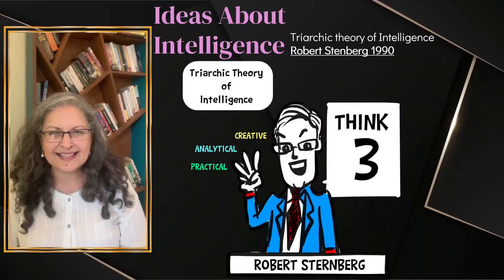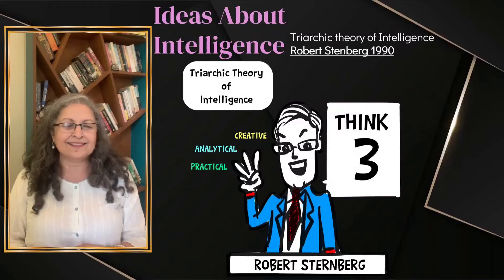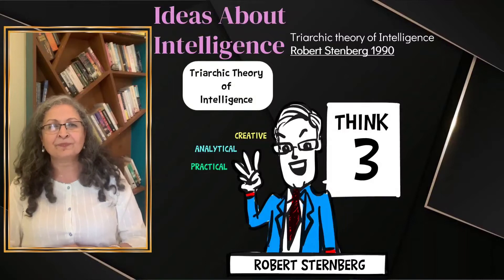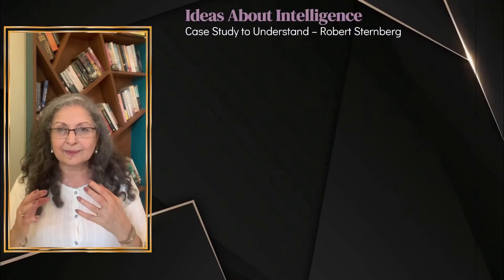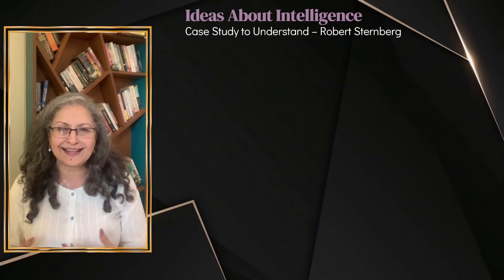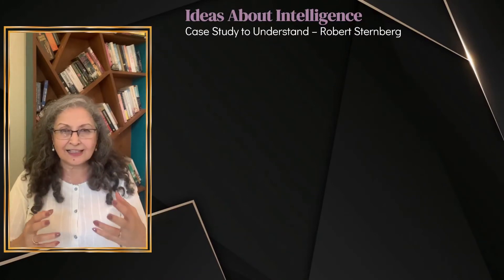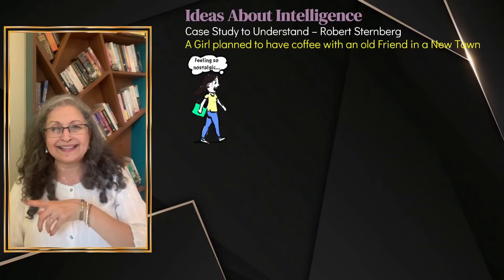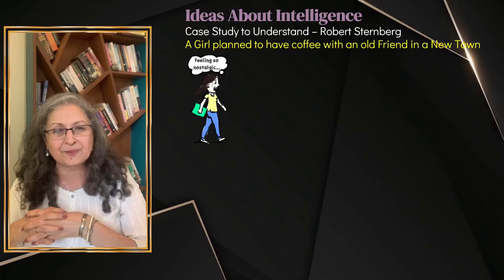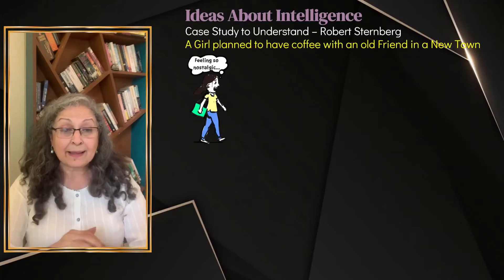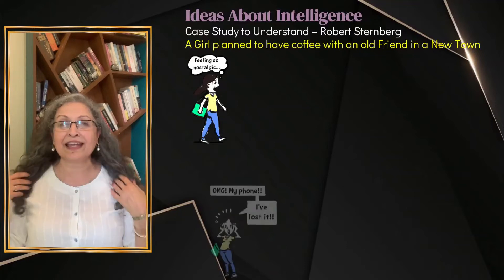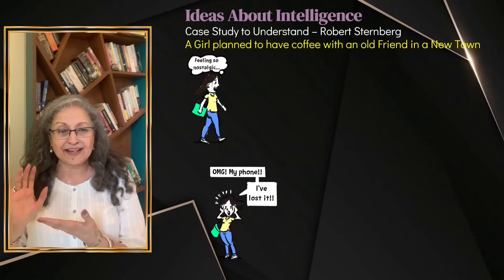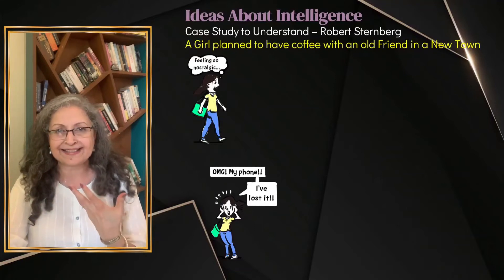Here is a tale that can illustrate the idea Sternberg brings to us. A young girl decided to go to a new city where she had an old friend, and they had already made a plan to meet for coffee. But what happens is that she loses her phone — and today we have our entire life on that phone. She doesn't have the friend's number written anywhere, and she panics.